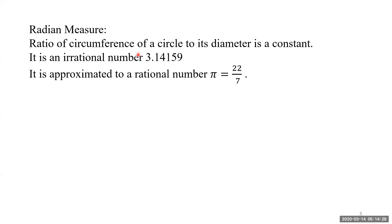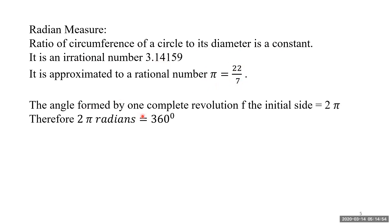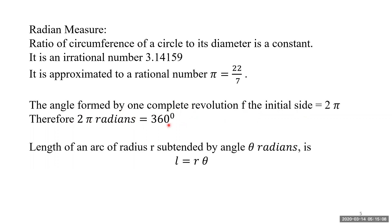The ratio of the circumference of a circle to its diameter is a constant, pi, which is approximately 22/7. It is an irrational number and cannot be expressed exactly as a fraction — 22/7 is only an approximation. The angle formed by one complete revolution is equal to 2π radians, so 2π radians equals 360 degrees. The length of an arc of radius r subtended by an angle θ radians is l = rθ.